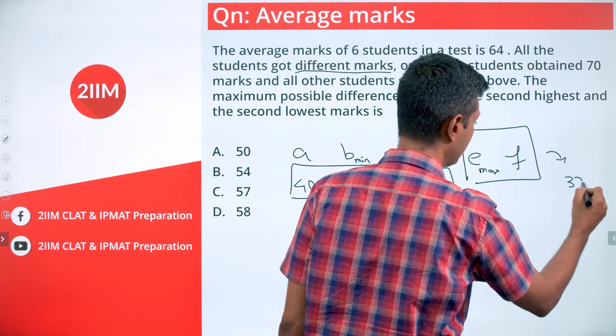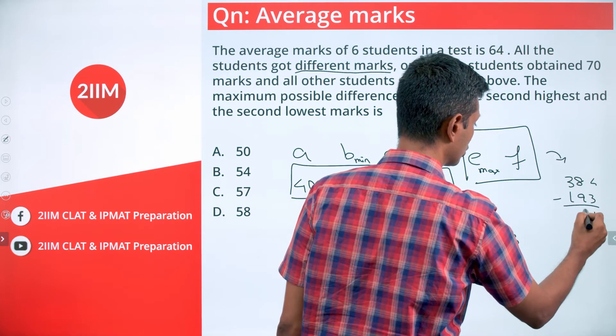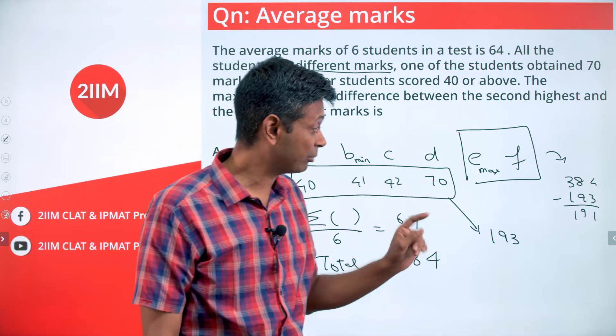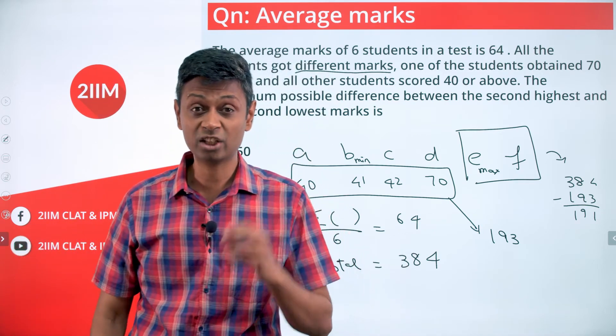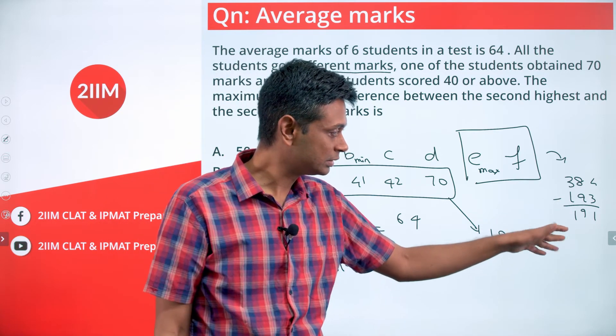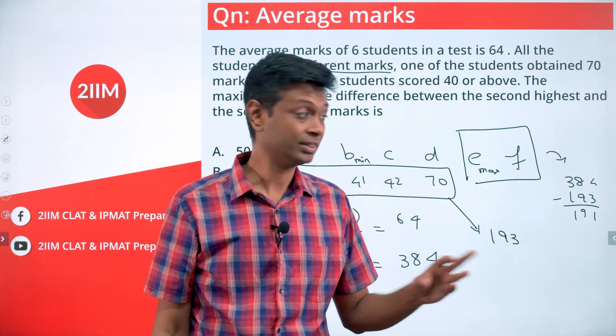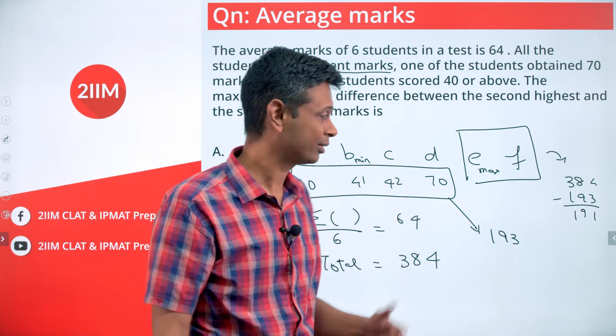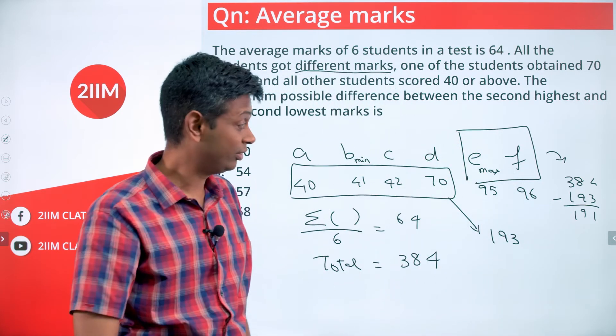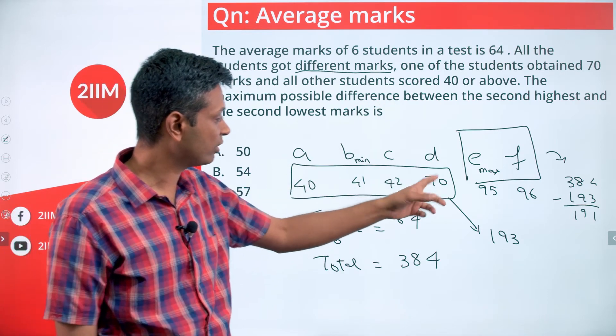All six put together add up to 384. These four add up to 193, so e plus f is going to be 384 minus 193, which is 191. E is less than f. Two numbers add up to 191. E will be as high as possible if f is just more than e. 191 divided by 2 is 95.5. Our best case scenario would be to have this as 95 and this as 96. This set of numbers satisfies all our criteria: 40, 41, 42, 70, 95, 96.